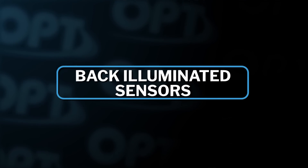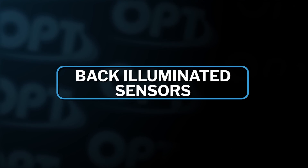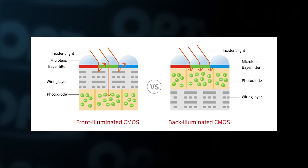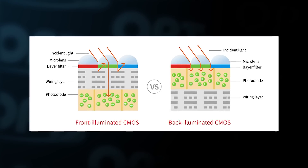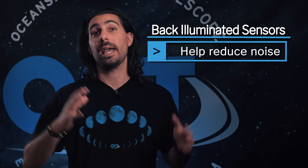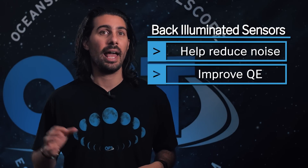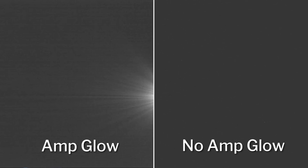Next, we have back-illuminated sensors, which are a relatively new addition to the astro world within the last few years. They help reduce noise, improve quantum efficiency, and eliminate amp glow. Most cameras come with a back-illuminated sensor these days, which is great.